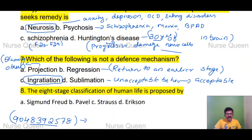The 8-stage classification of human life is proposed by whom? Options: Sigmund Freud, Pravel, Strauss, or Erikson. The correct answer is Erikson — Erikson's Psychosocial Stages.